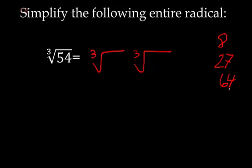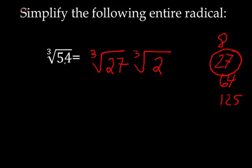4 cubed is 64, 5 cubed is 125. Just looking down that list, we notice right away that there is one perfect cube that will divide into 54. 54 is exactly equal to 27 times 2. So cube root of 54 is equal to the cube root of 27 times the cube root of 2. The cube root of 27 is 3. The cube root of 2 is an irrational number, and I can't simplify that any further.